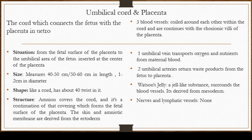These blood vessels are coiled around each other within the cord and are continuous with the chorionic villi of the placenta. The next feature in the structure is Wharton's jelly, a jelly-like substance which surrounds the blood vessels and is derived from the mesoderm. It is this Wharton's jelly which determines the thickness or thinness of the umbilical cord. There are no nerves or lymphatic vessels inside the umbilical cord.